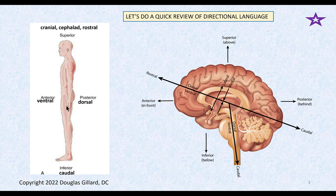This is the anatomical position, palms forward. In front means anterior and ventral. Behind means posterior and dorsal. Down toward the floor is inferior or caudal. Up toward the head is superior, cranial, or cephalad. Rostral really shouldn't be used much — it's really when we're talking about the brain, but some texts use the term rostral meaning superior. Not a great term.